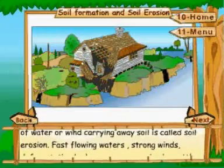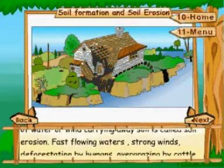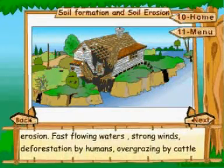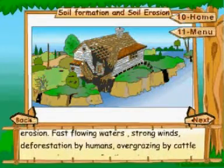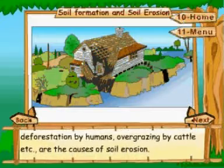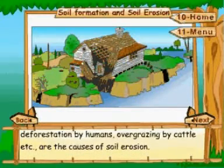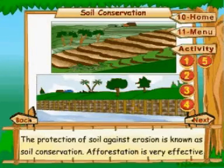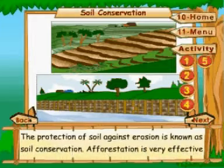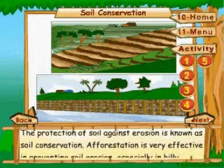Fast flowing waters, strong winds, deforestation by humans, and overgrazing by cattle are the causes of soil erosion. Soil conservation: the protection of soil against pollution is known as soil conservation.